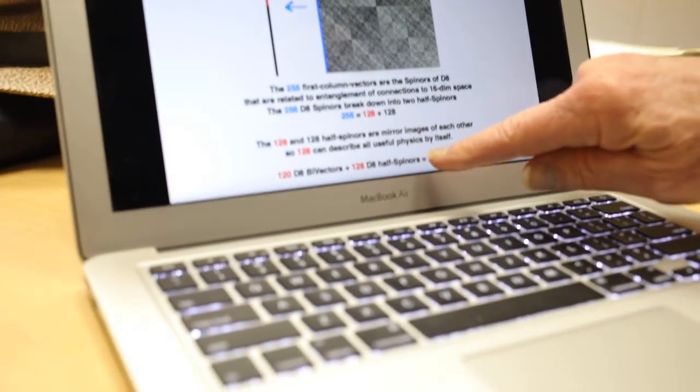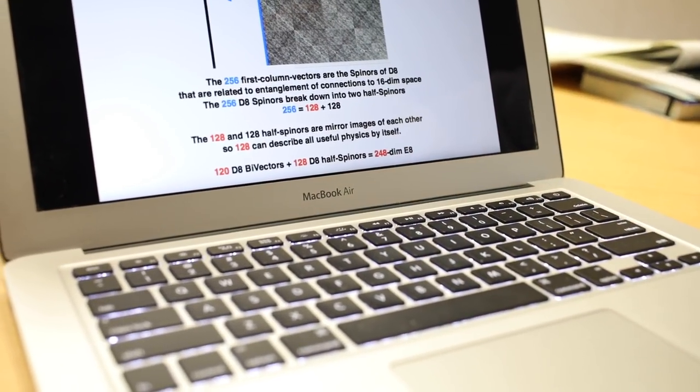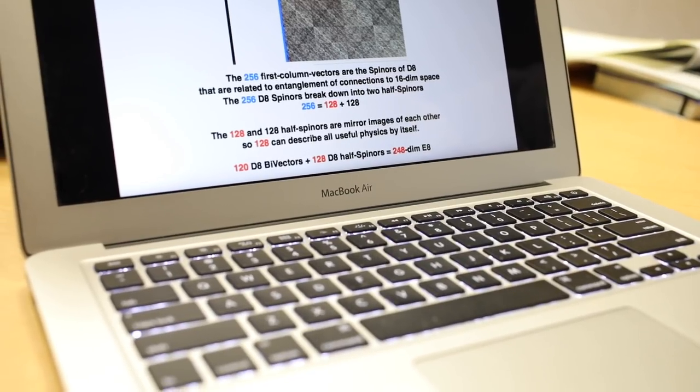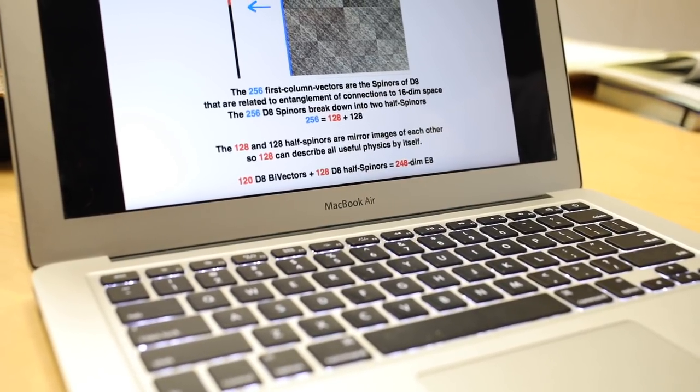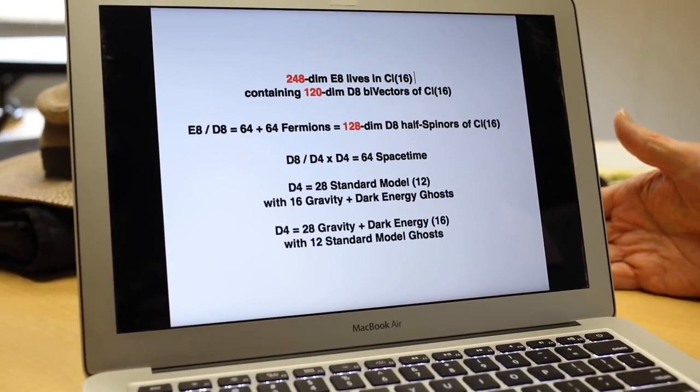You have 128-dimensional things that each give you the basic information with the spinors of Clifford 16. You only need one of those for E8. If you add the 128 half spinors to the 120 bi-vectors, that gives you 248-dimensional E8. That's where I view it as coming from.